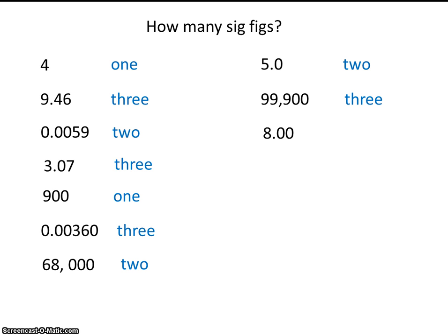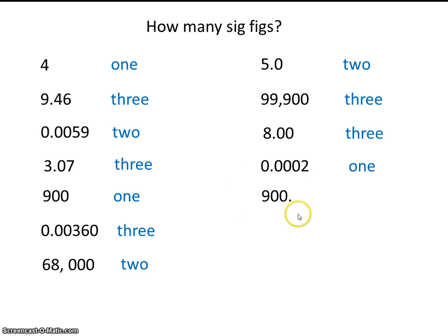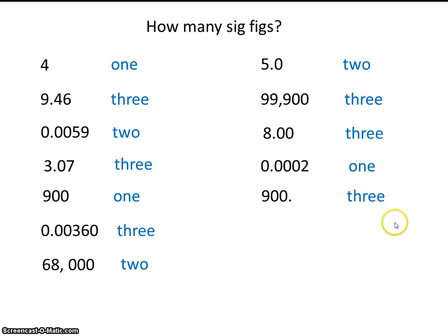Try this one. These are trailing zeros, but there's a decimal place, so 3 sig figs. How many significant figures here? That's right, just 1, because all these zeros are leading zeros — leading zeros are not significant. What about this number? 900 here had 1 sig fig, but 900 here has a decimal place, so these trailing zeros are significant — 3 sig figs.